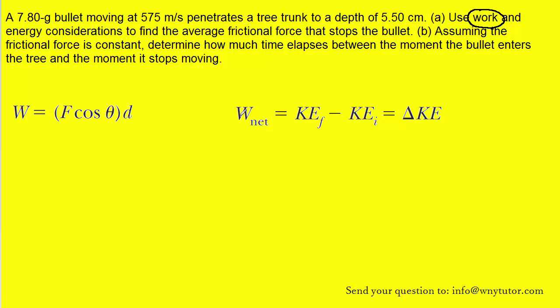The work done on the bullet can also simply equal the final kinetic energy minus the initial kinetic energy. And since the equations are both equations for work, what that means is that we can set the two expressions for work equal to one another. So let's go ahead and do that.